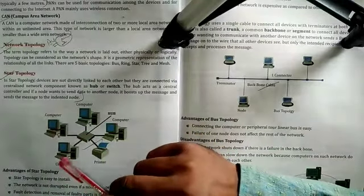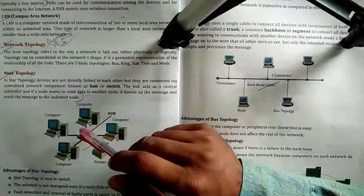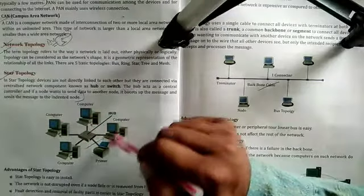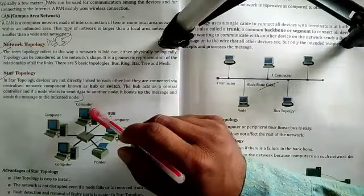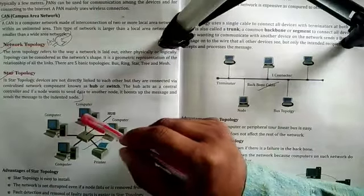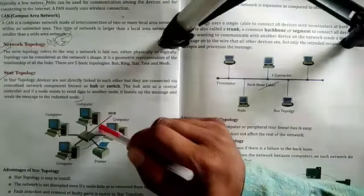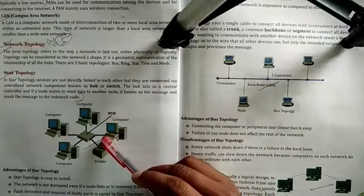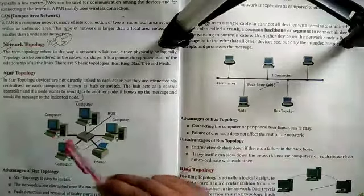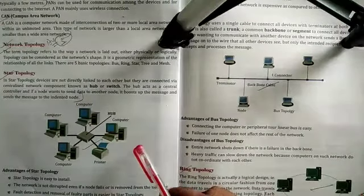There are some advantages of star topology. The first advantage is it is easy to install because all computers are directly linked to one server, and that one server maintains and controls all the nodes. A disadvantage is that it requires a longer length of cable when assembling the setup. Another disadvantage is that if the hub — the centralized network — fails, then the whole system fails because all nodes are disabled.